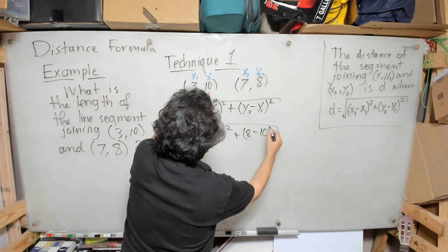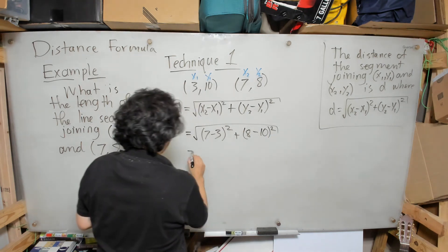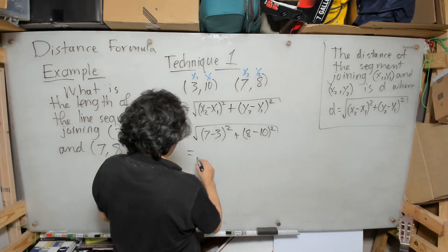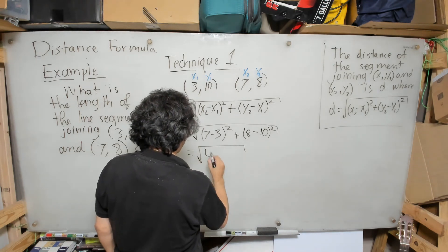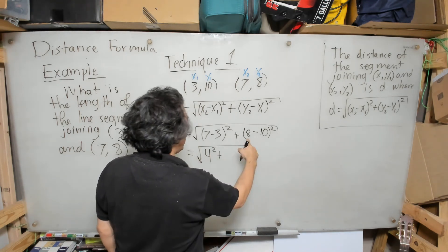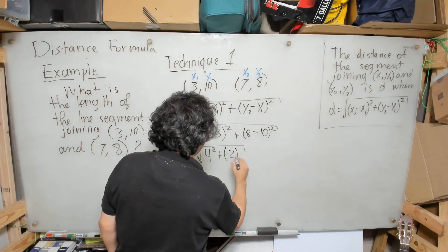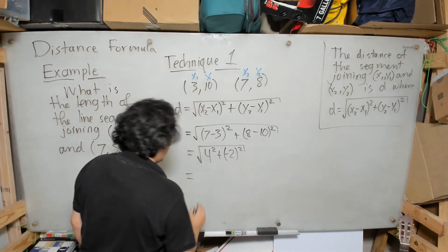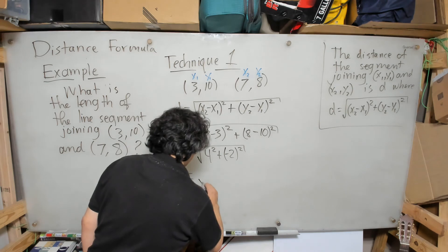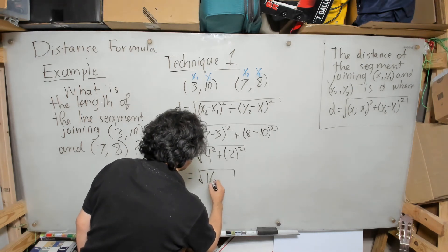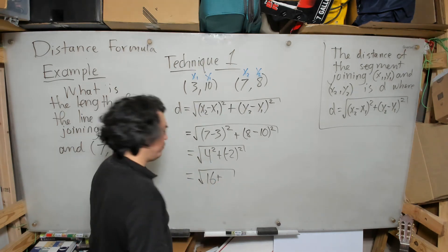I know that 7 minus 3 is 4, so that's going to be the square root of 4² plus 8 minus 10, that's negative 2, squared. I know that 4 times 4 is 16, so this will be the square root of 16. Negative 2 squared is 4.